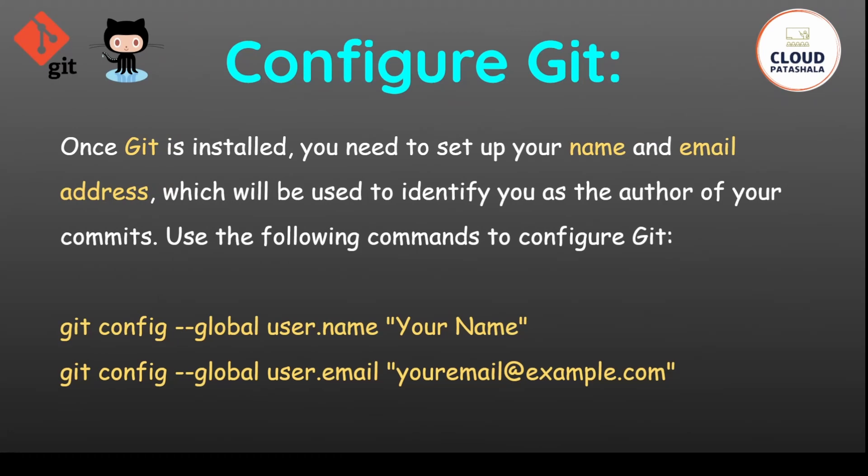Once the installation process is complete we need to configure git for using it on our machines. In this configuration we would be setting up the git username and the email address so that git can use this to track the changes on the files.